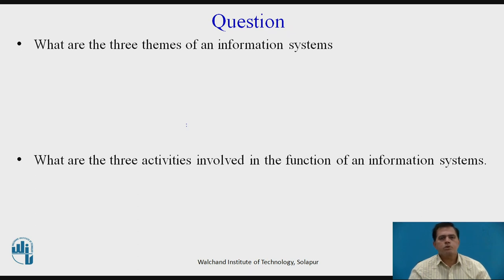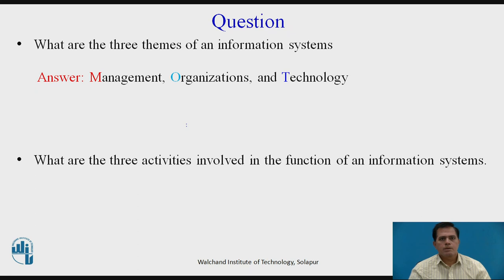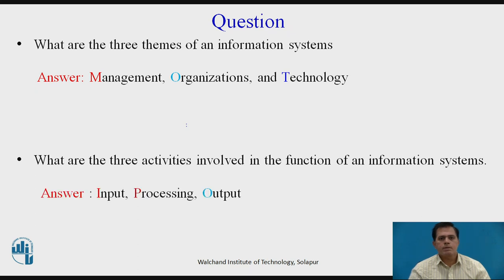After discussing these topics, there are some review questions. The first question is: what are the three themes of an information system? The answer is management, organizations, and technology. The second question is: what are the three activities involved in the function of an information system? The answer is input, processing, and output.